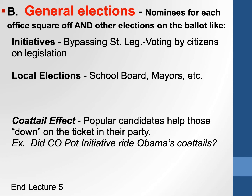The coattail effect: the first state to have recreational marijuana was Colorado. They timed it perfectly in 2008 — Barack Obama was on the ballot, dynamic among young people and liberals, who were the two groups that would bring recreational pot to Colorado. As people showed up to vote for Obama, they could also vote for marijuana. People showing up for one thing ride the coattails of something else on the ballot.